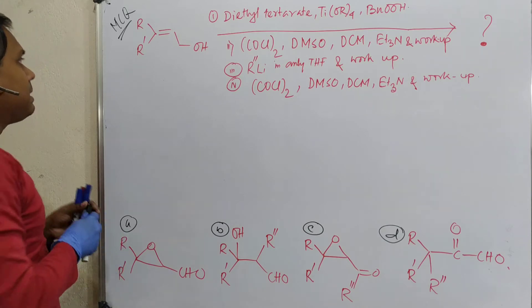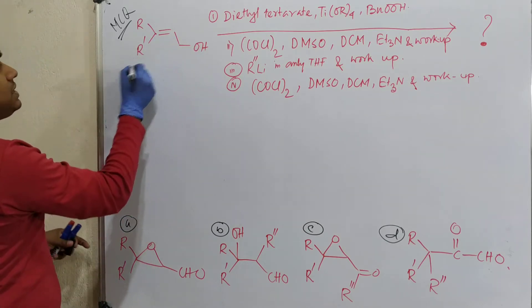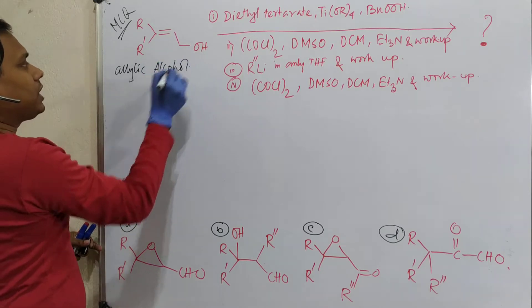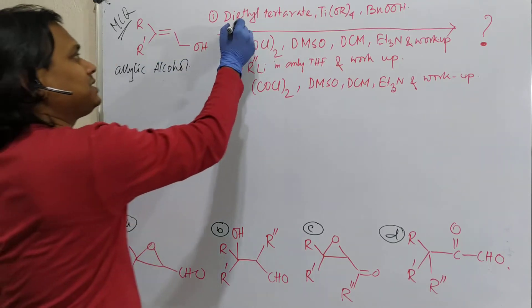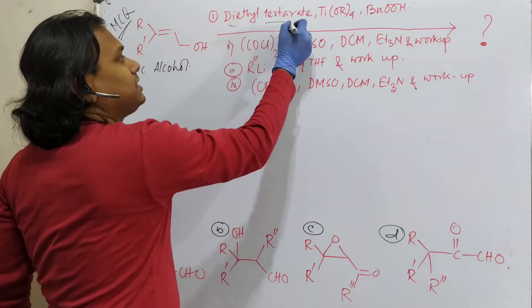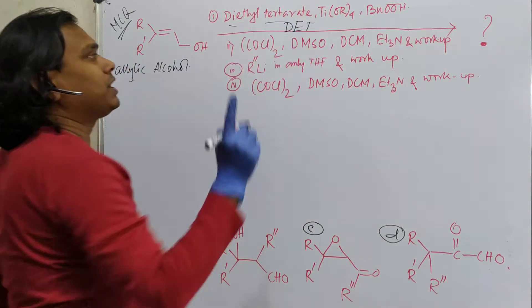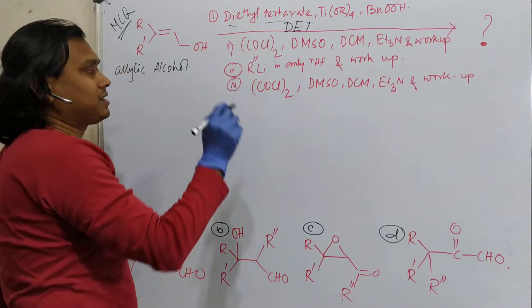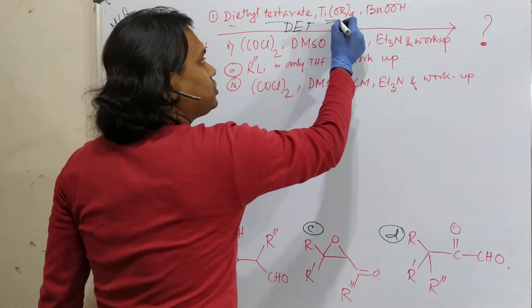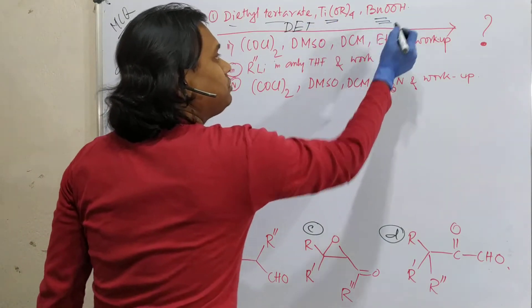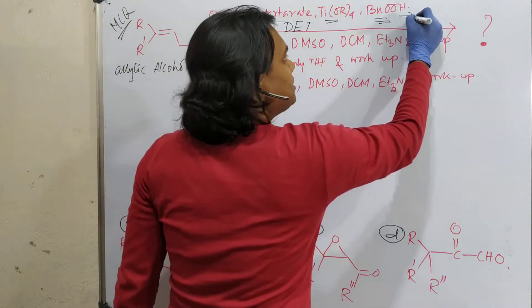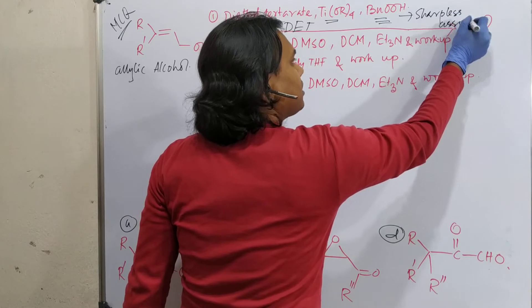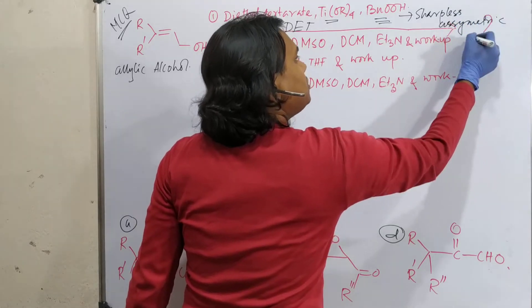You try to understand what functional group is given in front of you and what reagents are given, what is their property. See, by nature, this is actually an allylic alcohol. So just allylic alcohol and see this is diethyl tartrate. It also consists of abbreviated as DET. But look carefully, I haven't mentioned plus or minus. Just diethyl tartrate.